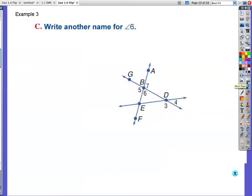Example number three. Write another name for angle six. There's more than one option with this. I'm just going to give you a couple that would work. I would say angle EBD. You could say angle DBF. I just want to point out in both cases, B is your vertex. It has to be your vertex.